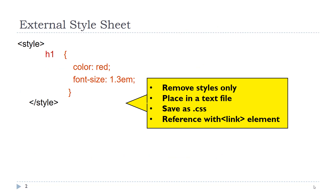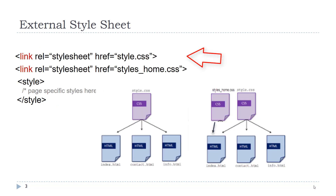After you have decided on the styles that you will be using, you can remove them from inside the embedded stylesheet, place them in a text file, save it with a CSS extension, and reference it with the link element. The link element is placed on top of the style element. It is possible to also have embedded styles in addition to external styles.